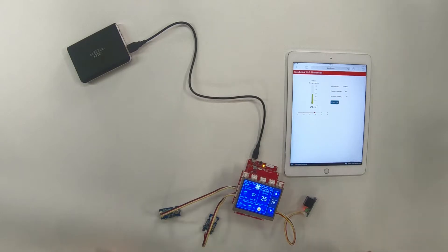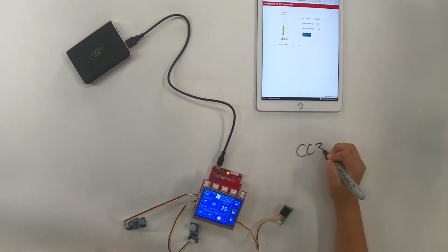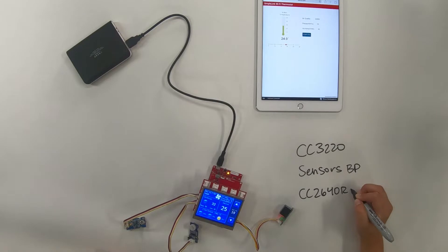So we have our CC3220 is the main component of our design. And then we have the sensors booster pack. We also have the CC2640R2. And we have the Kentek QVGA display.